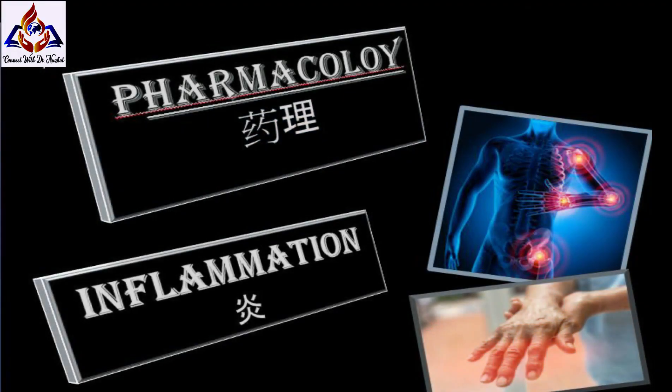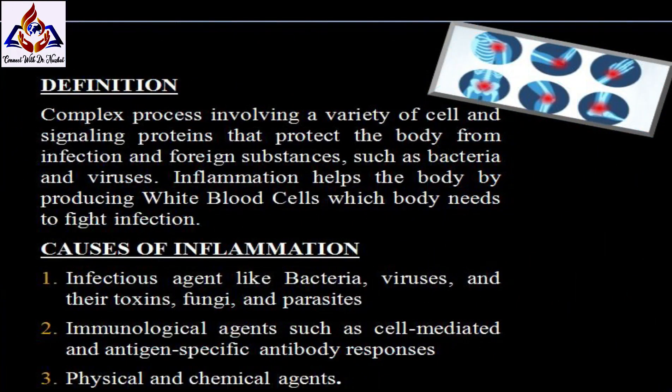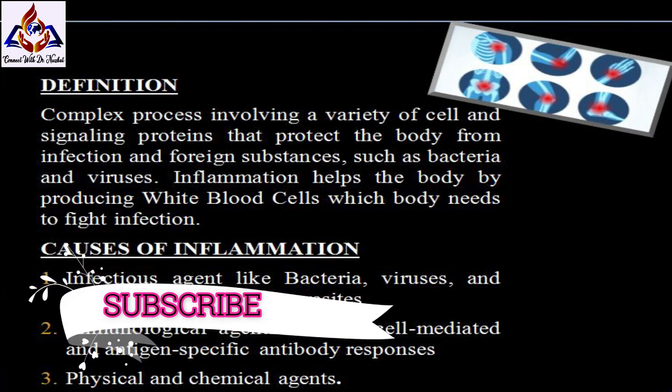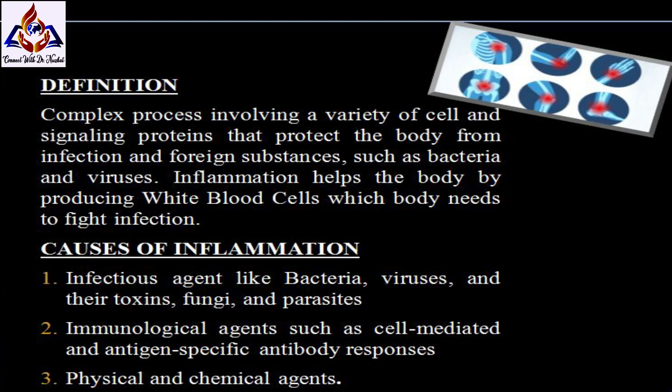Our topic is inflammation. Inflammation is a complex process involving a variety of cells and signaling proteins that protect the body from infection and foreign substances such as bacteria and viruses. Inflammation helps the body by producing white blood cells needed to fight infection. Sometimes the immune system triggers an inflammatory response inappropriately, as is the case with autoimmune diseases, where the body attacks its own healthy tissues as if they are infected or abnormal.